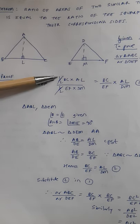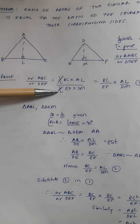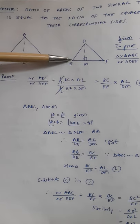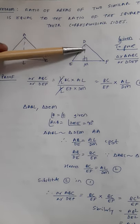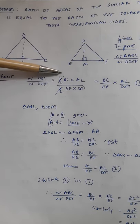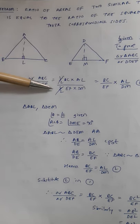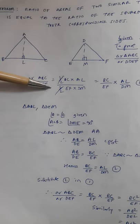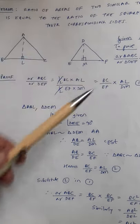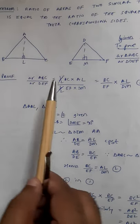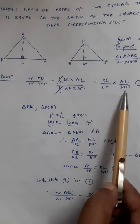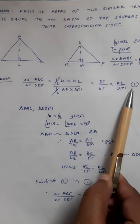Area of ABC will be half the base BC multiplied by the height AL. So the numerator will become half BC into AL, and the denominator is area of DEF, that is half of EF into DM. Half gets cancelled from numerator and denominator, so we are left with BC upon EF into AL upon DM. Mark this as equation number one.